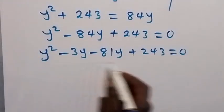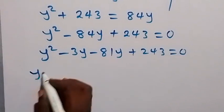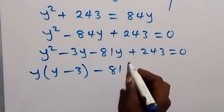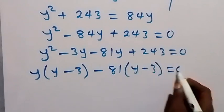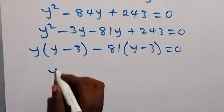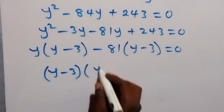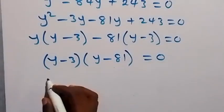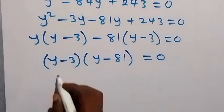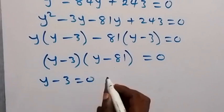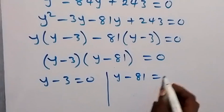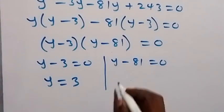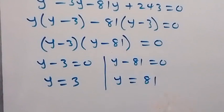Factors of 243 that give minus 84 are minus 3 and minus 81, so we have y squared minus 3y minus 81y plus 243 equals zero. We group and factor: y(y minus 3) minus 81(y minus 3) equals zero, giving (y minus 3)(y minus 81) equals zero. So y equals 3 or y equals 81.